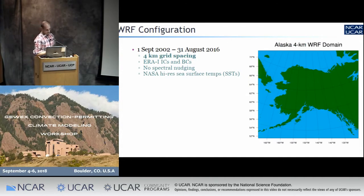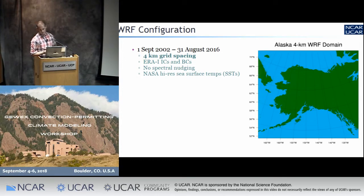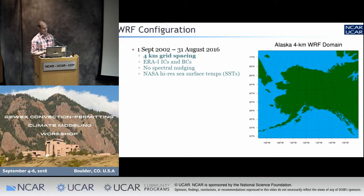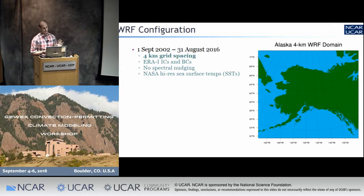This is our domain — we basically cover the entirety of Alaska and watersheds that drain through Alaska, including the entire Yukon River. We have four-kilometer grid spacing, ERA-Interim for ICs and BCs except for SSTs, where we use a high-res NASA product. This domain has no spectral nudging because it's smaller than the CONUS domain and is strongly forced throughout the year, so WRF tends not to drift from the forcing climate — a huge computational savings.